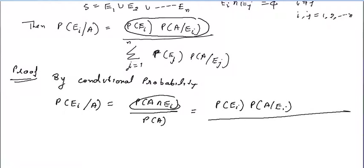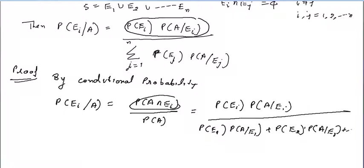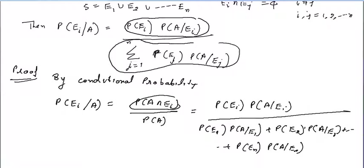And what will the denominator be? It will be probability of E1 into probability of A given E1, plus probability of E2 into probability of A given E2, plus so on, up to probability of En into probability of A given En. Hence proved. This summation is what we have written in the formula.